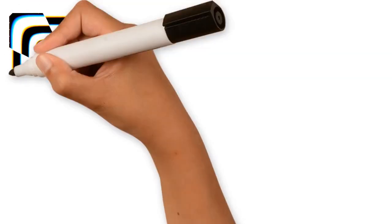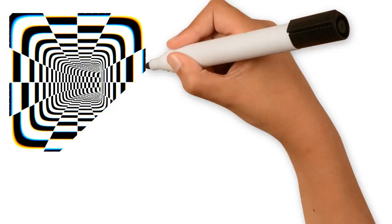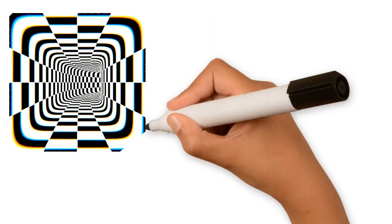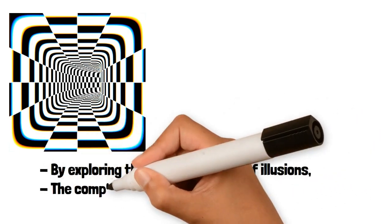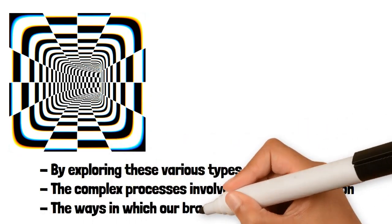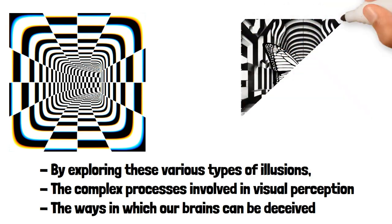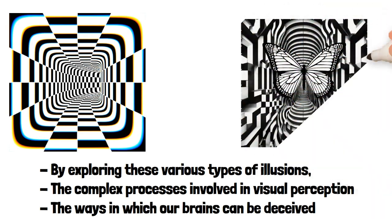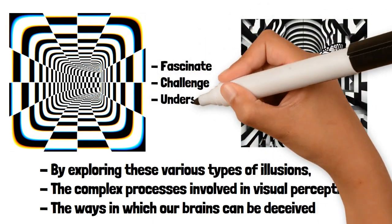Optical illusions are powerful examples of how our brains interpret visual information, often leading us to see things that aren't there or to misinterpret what we do see. By exploring these various types of illusions, we gain insight into the complex processes involved in visual perception and the ways in which our brains can be deceived. Whether caused by physiological factors, cognitive processing or the clever use of perspective and color, optical illusions continue to fascinate and challenge our understanding of reality.